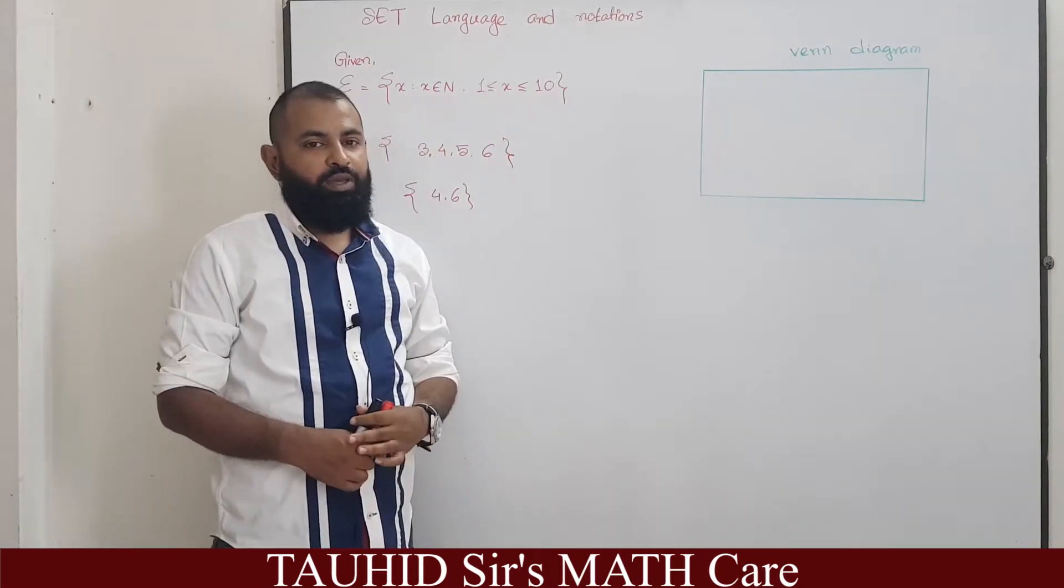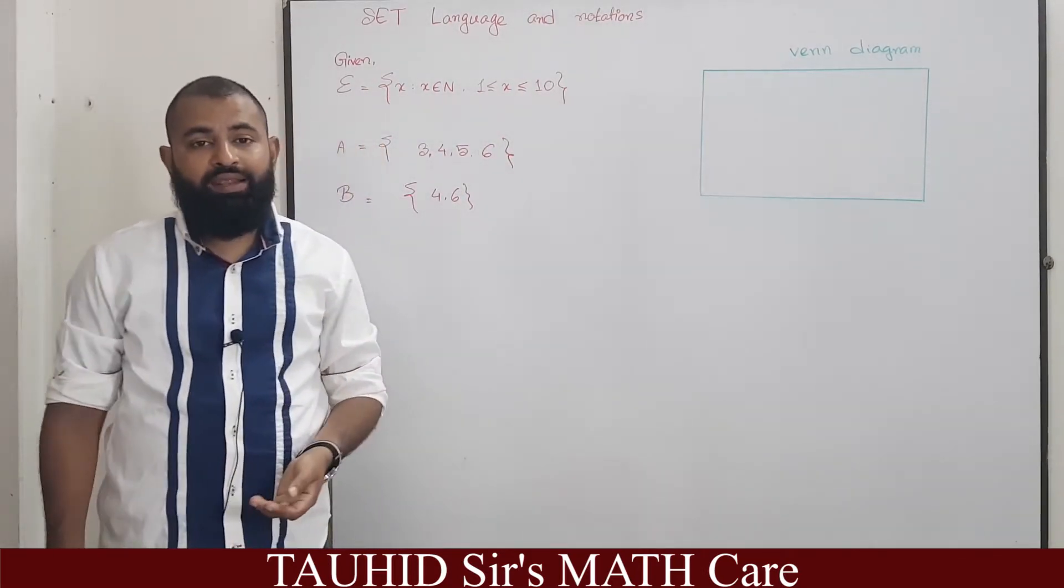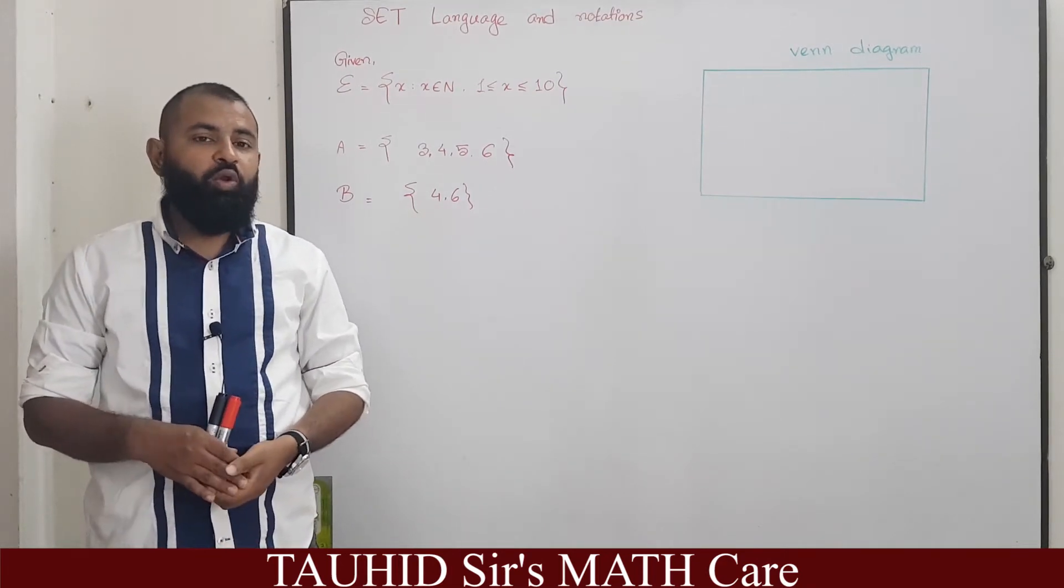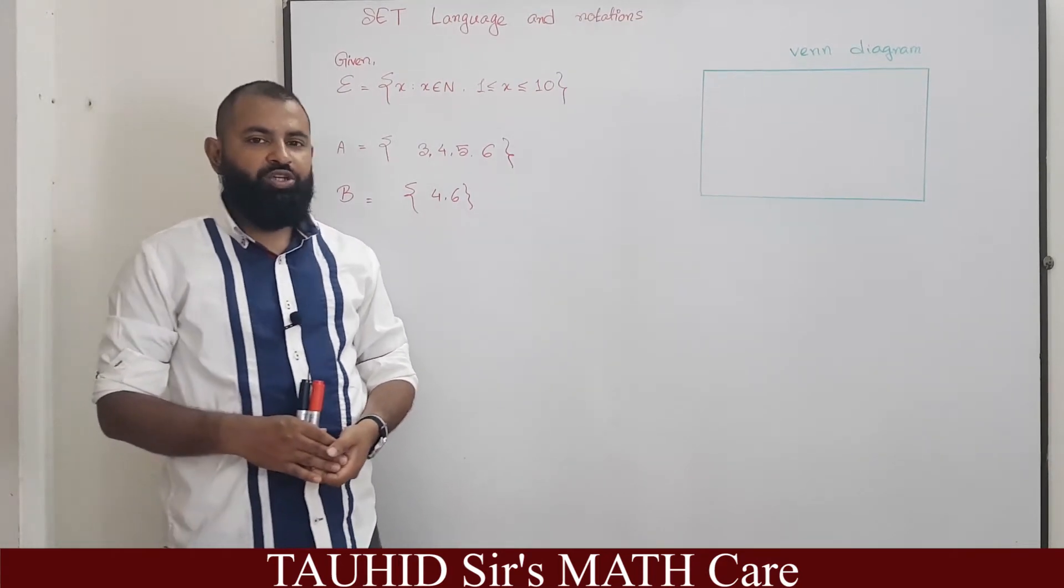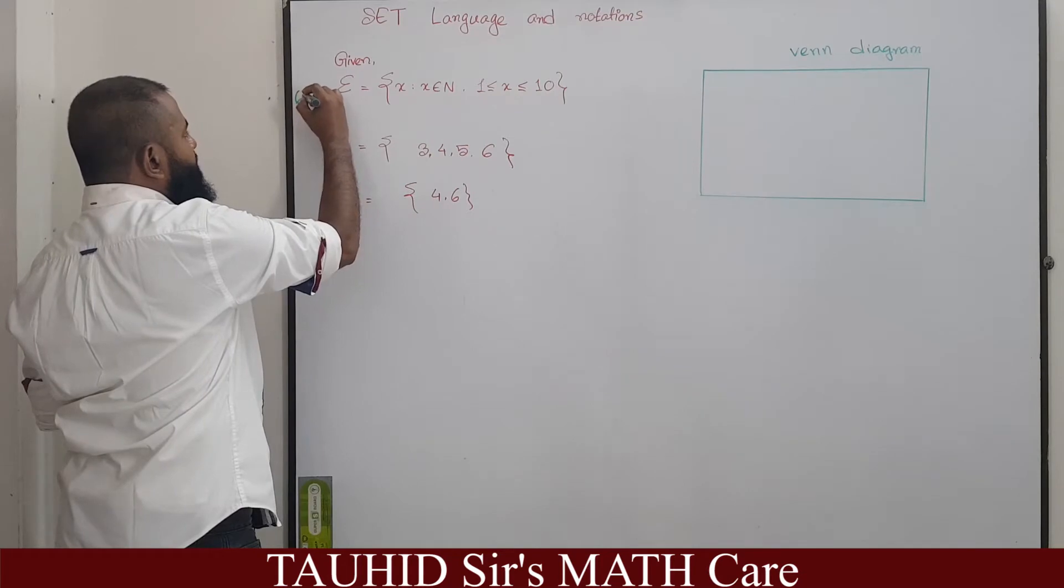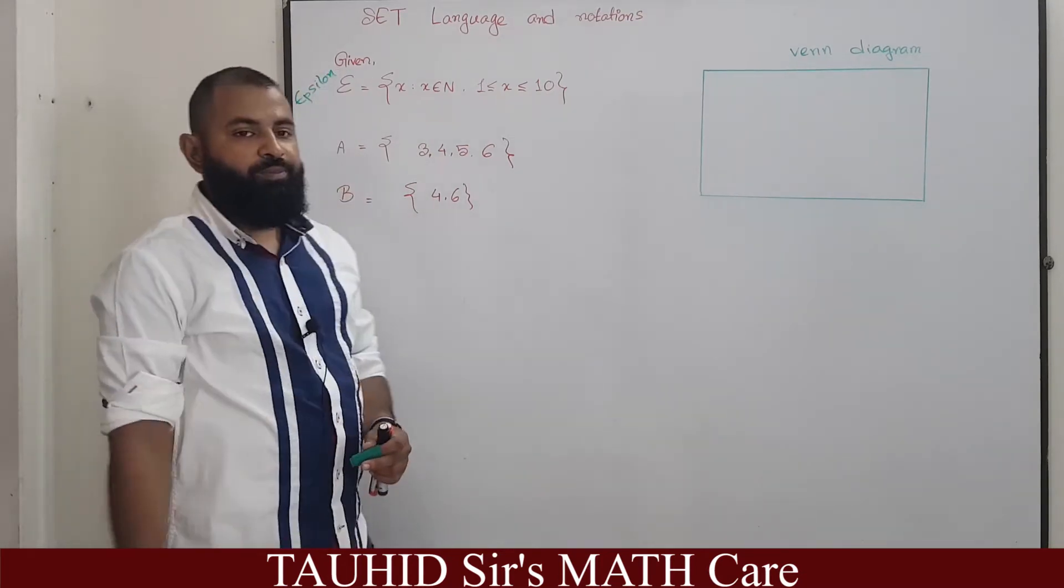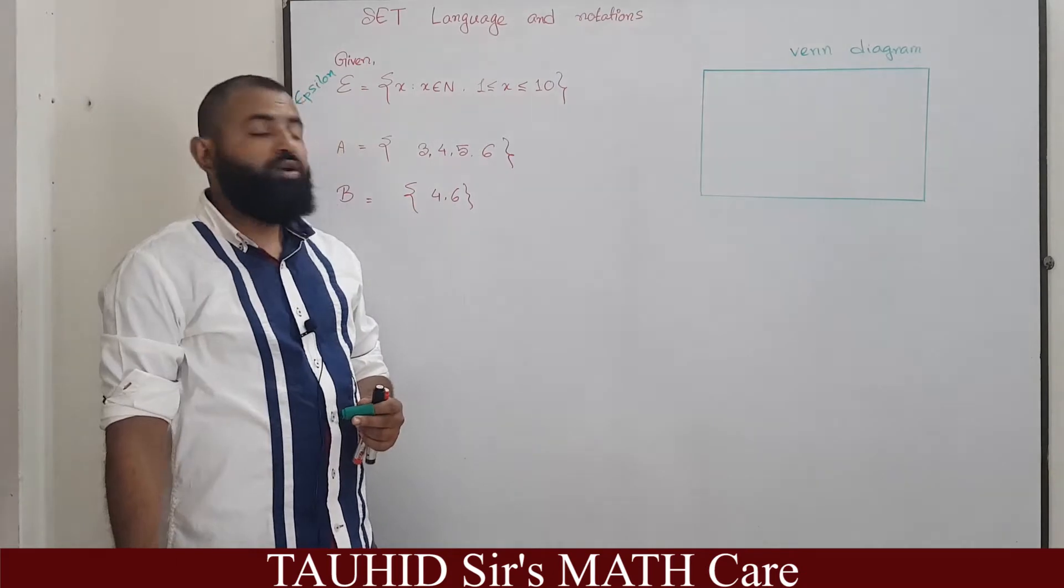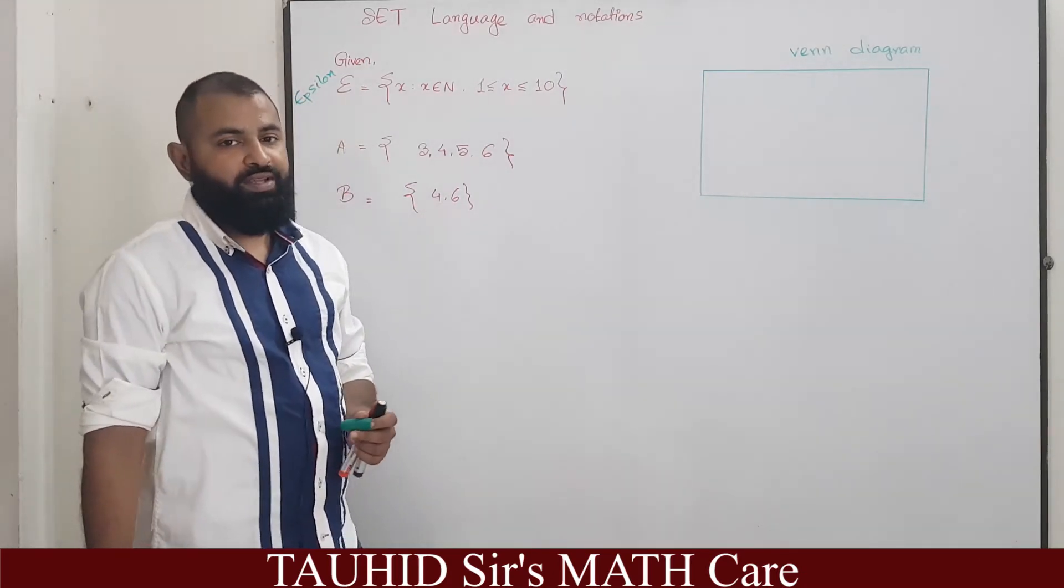This type of method is called set builder method and while learning set you must know the correct pronunciations. This thing is called epsilon. What does epsilon stand for? Epsilon stands for universal set.